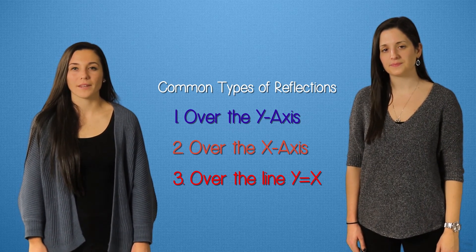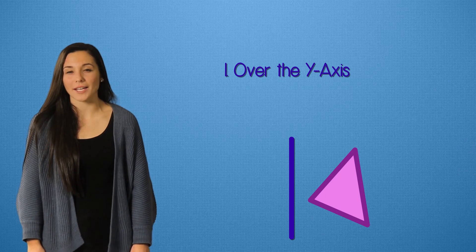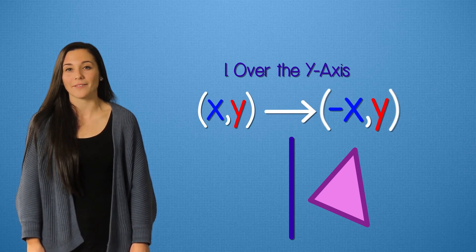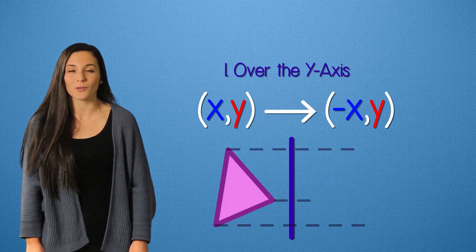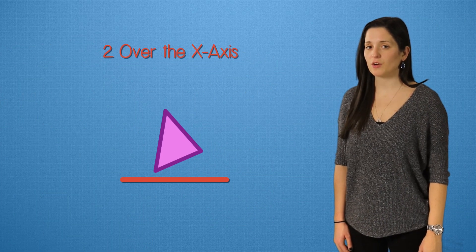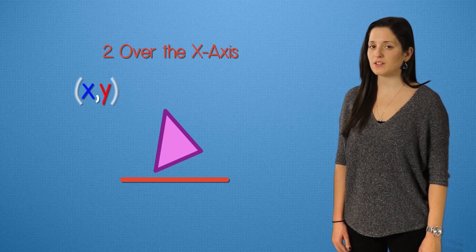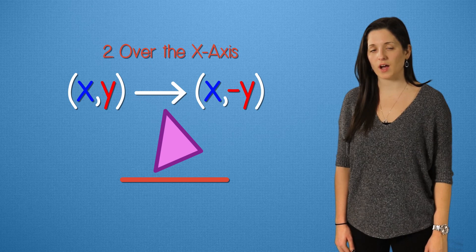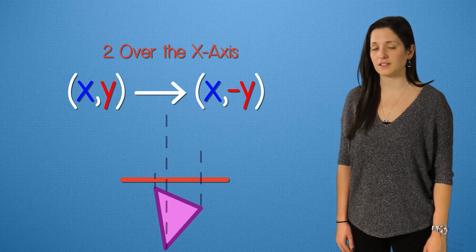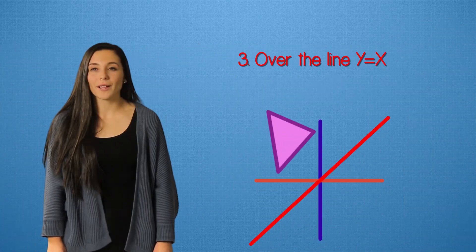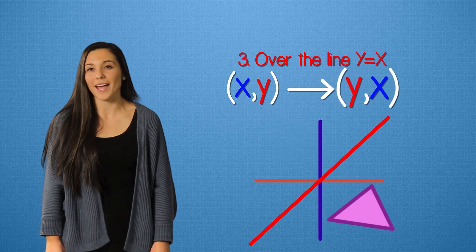Here are the rules for each. When reflecting over the y-axis, all of the x-values change signs, so (x, y) becomes (−x, y). Think about it — when reflecting this direction, the y-values don't change at all. When reflecting over the x-axis, all of the y-values change signs, so (x, y) becomes (x, −y). Again, the x-values don't change across the x-axis. And finally, when reflecting over the line y equals x, we need to swap the order of x and y, so (x, y) becomes (y, x).